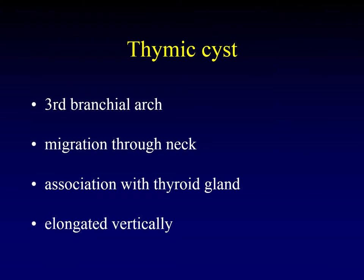Next are thymic cysts. The thymus derives from the third branchial arch — not the cleft — and migrates down through the neck during fetal life, in close association with the thyroid gland and the inferior parathyroid glands. When a thymic cyst forms, it is elongated vertically along the tract the thymus takes as it migrates. That vertical elongation — these are tall, thin, hot dog-shaped objects — is what clues us in to the specific diagnosis of thymic cysts.